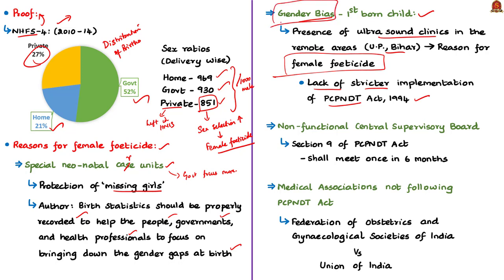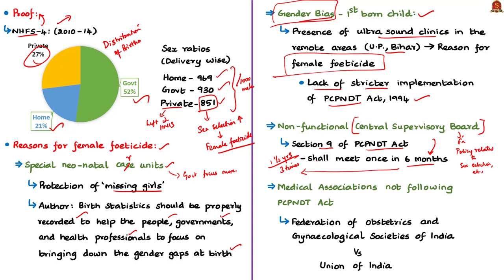Under Section 9 of the PCPNDT Act, the Central Supervisory Board shall meet at least once every six months. Its main function is to advise the central government on policy matters relating to the use of prenatal diagnostic techniques, sex selection techniques, and their misuse. However, the author notes the Central Supervisory Board has not met for over one and a half years, when ideally it should have met at least three times. The author hopes the new Union Minister of Health and Family Welfare will help regularize these meetings.